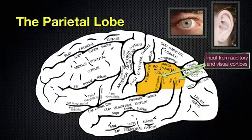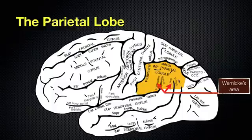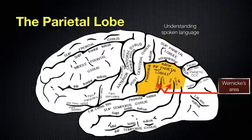Then we have a specialized area called Wernicke's area — that's the German pronunciation. What that helps us do is understand spoken language. So when someone is speaking to you and you need to understand what they're saying, there's processing that's happening in Wernicke's area.